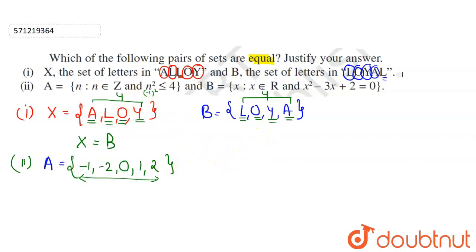Now for set B, let us write the roots for this equation. So this will be x square minus 2x minus x plus 2, this is equal to 0.